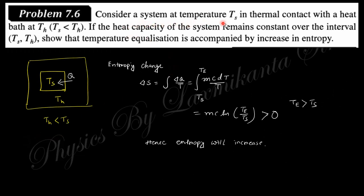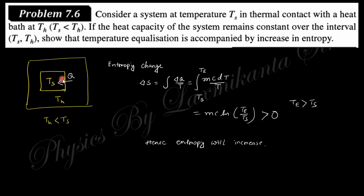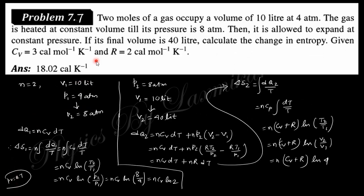Problem 6: consider a system at temperature Tₛ in thermal contact with a heat bath at temperature Tₕ, where Tₕ > Tₛ. Since there is a temperature gradient, heat flows from the higher-temperature bath into the system. This makes dQ positive for the system, so dS = dQ/T > 0 — the entropy of the system increases. Heat flows from the surroundings into the system, confirming that the system's entropy increases.